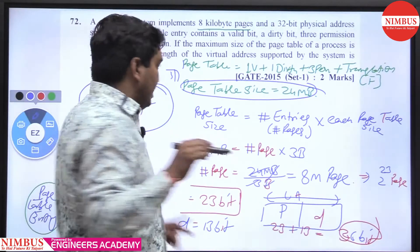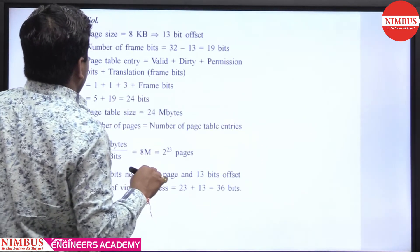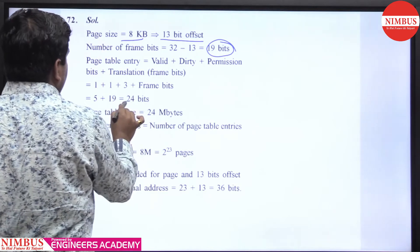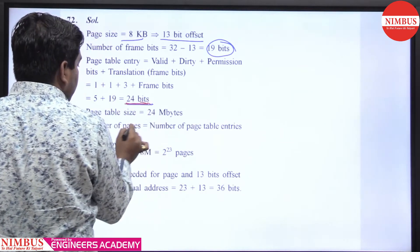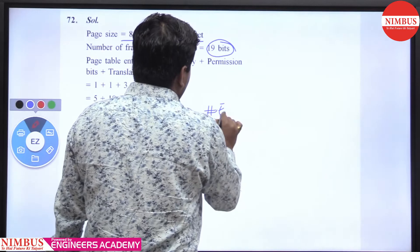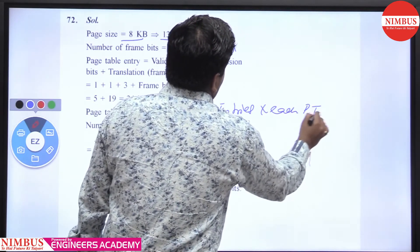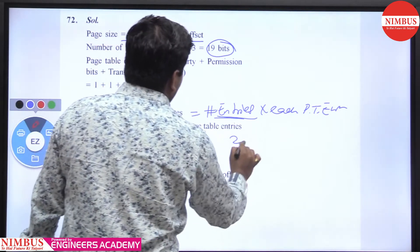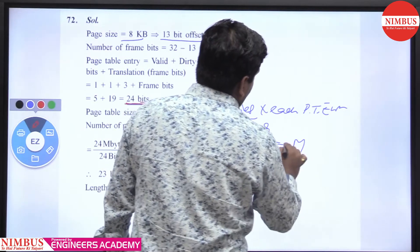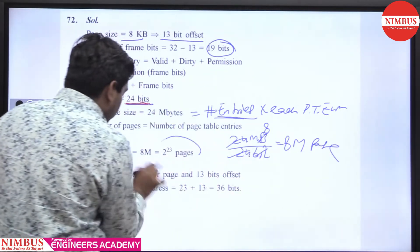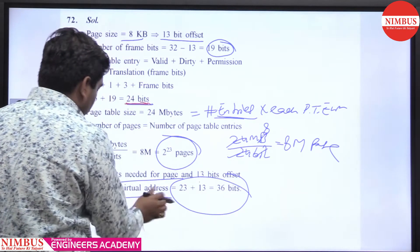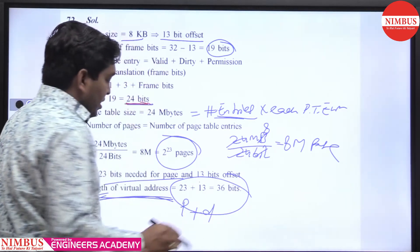To summarize the solution: page size is 8 KB so the offset is 13 bits. Number of frames = 2^19, so F = 19 bits. Page table entry size = 24 bits = 3 bytes. Using the page table size of 24 MB, number of pages = 24 MB / 3 bytes = 8 mega pages = 2^23. So P = 23 bits and D = 13 bits. The length of the virtual (logical) address = P + D = 23 + 13 = 36 bits.